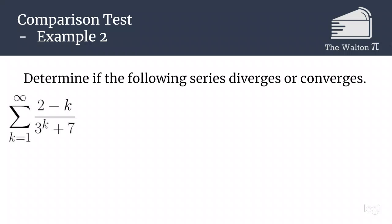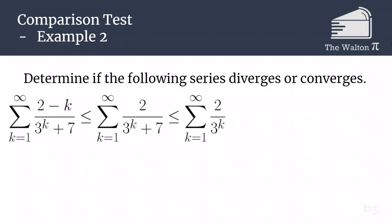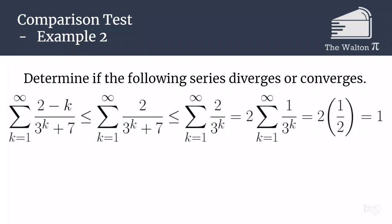Let's do one more example: determine if the series sum from k equals 1 to infinity of (2 minus k) over (3 to the k plus 7) diverges or converges. Well, that is less than or equal to 2 over (3 to the k plus 7), because dropping the minus k only increases the fraction. And if we decrease the denominator by dropping the plus 7, that also increases the fraction. So we can say it is also less than or equal to 2 over 3 to the k. Now 2 over 3 to the k is 2 times the sum of 1 over 3 to the k, and we know that series converges to 1 half.